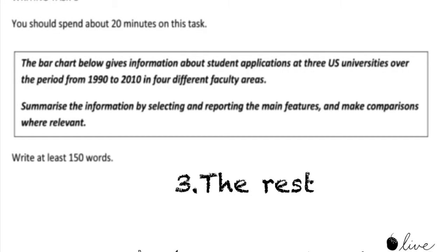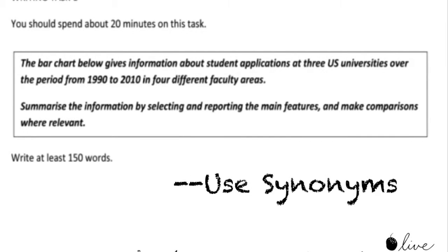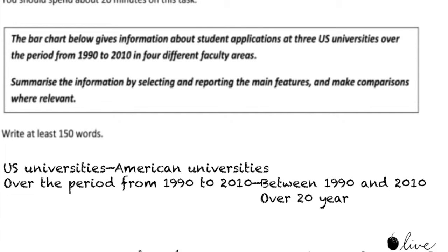And the next step is to rewrite the rest of the question. How? You can use synonyms. The rest of the sentence is: student applications at three US universities over the period from 1990 to 2010 in four different faculty areas. So you can change 'US universities' to 'American universities', and 'over the period from 1990 to 2010' to 'between 1990 and 2010', or you can say 'over 20 years'.